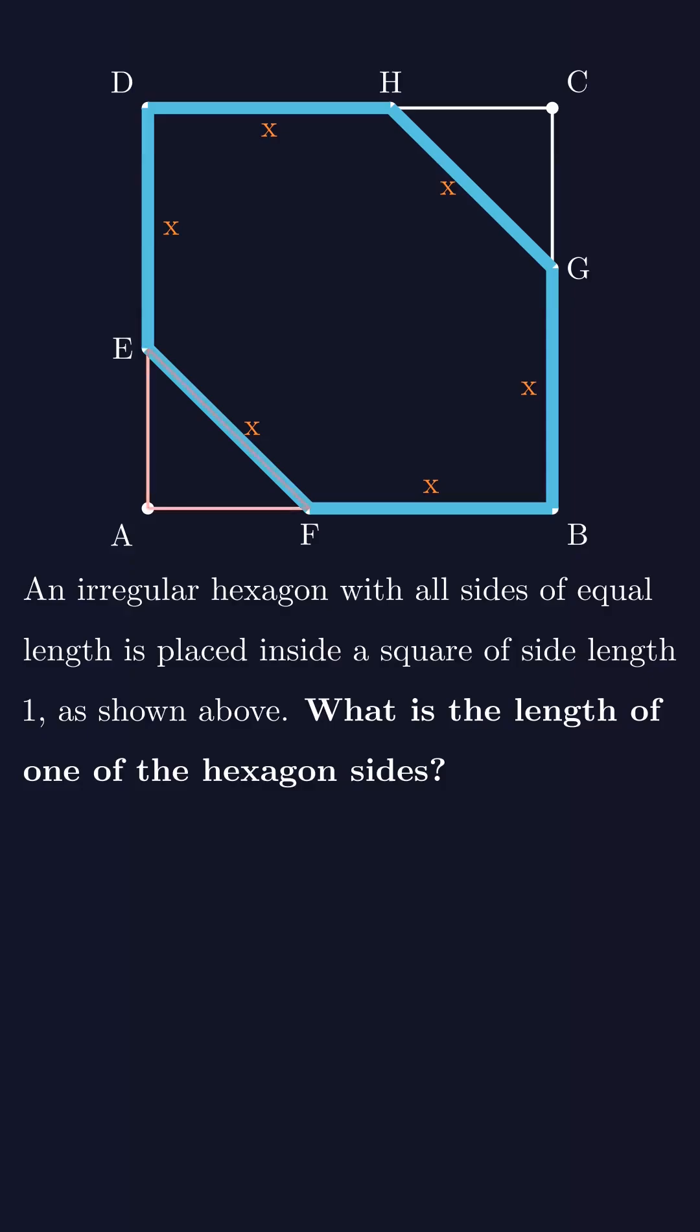Now take a look at this red triangle. DE is x units long. That means the remaining part of side EA must be 1 minus x. And for side AF, it's also 1 minus x.